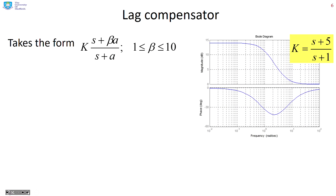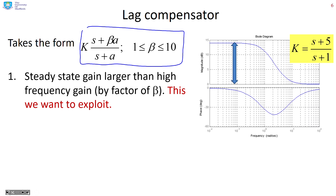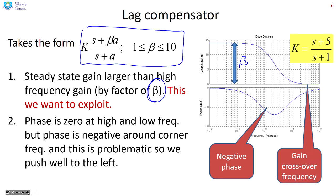Here's a lag compensator. It takes this form, where beta is bigger than one — in other words, the zero is bigger than the pole. The steady state gain, or the low frequency gain of the lag compensator, is larger than the high frequency gain, and this factor is beta. This beta is what we want to exploit in the design, because it enables us to choose the low frequency gain of the compensated system.